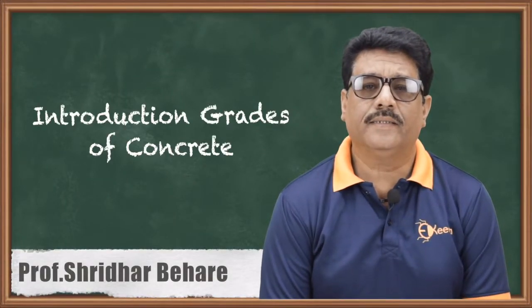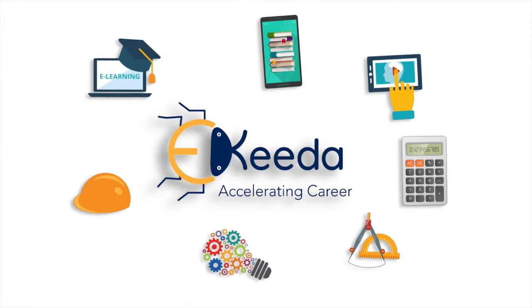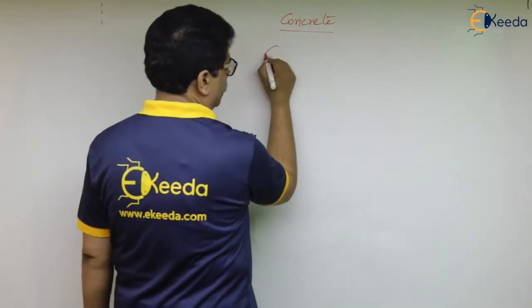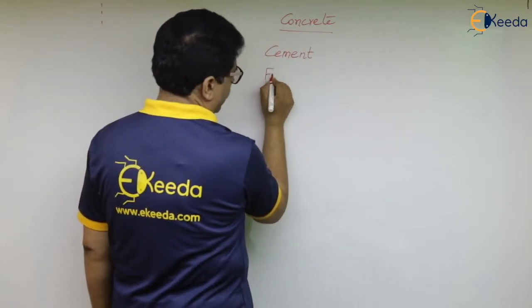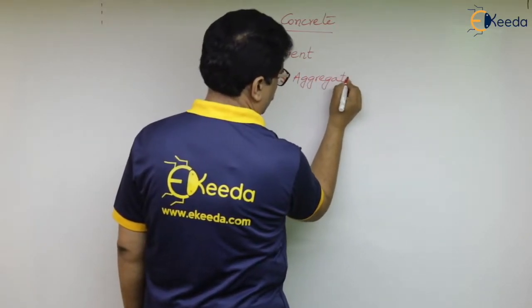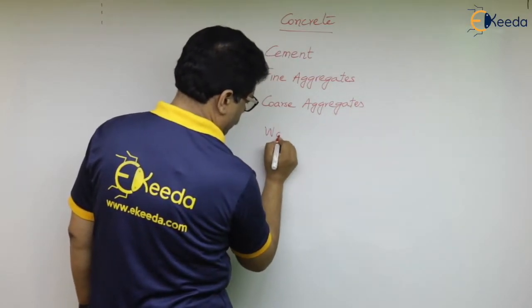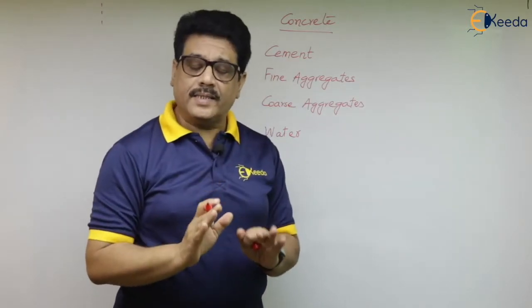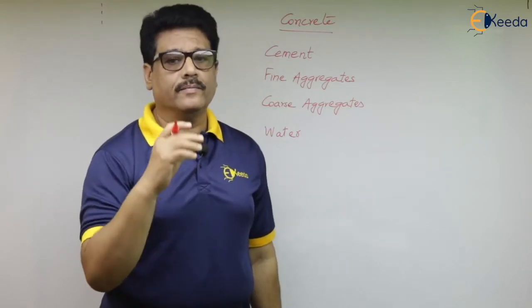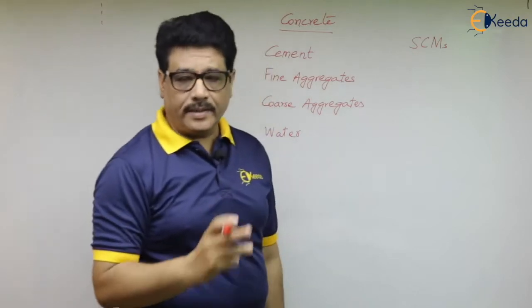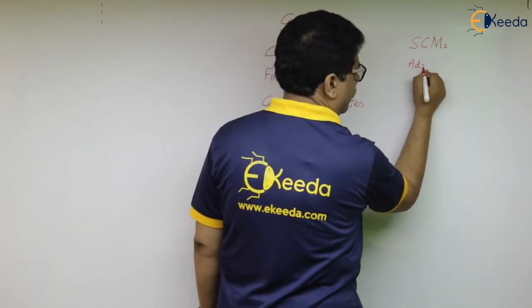Hello friends, let us see the Introduction to Concrete. As we all know, concrete is a man-made construction material which consists of cement, fine aggregates, coarse aggregates, and water. These are the necessary ingredients of concrete, and for getting a particular function or purpose served, we can add secondary cementitious materials. We can also add admixtures.